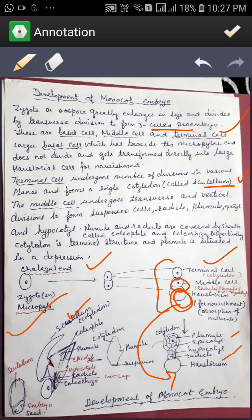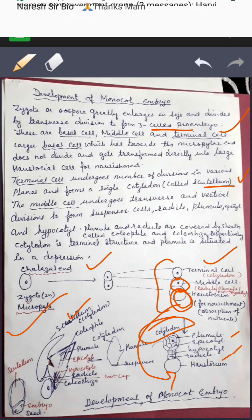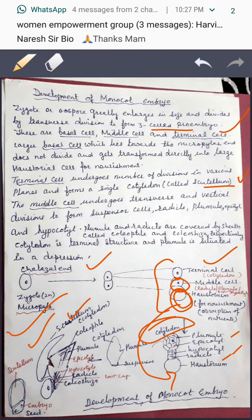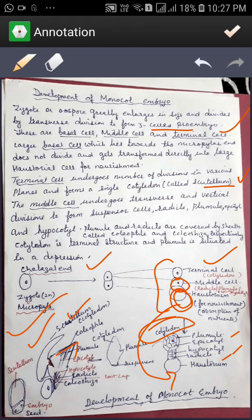The terminal cell will form the cotyledon. The upper portion develops into the cotyledon. This is the embryo. The embryo has plumule as well as radicle. Plumule is covered by coleoptile and radicle is covered by coleorhiza.